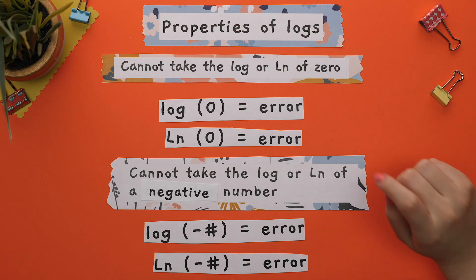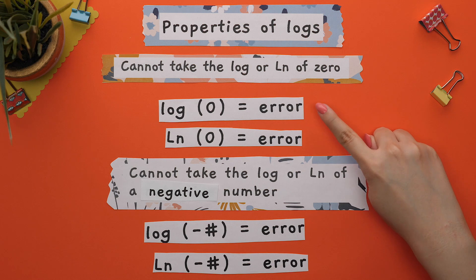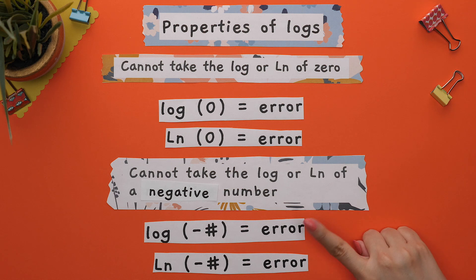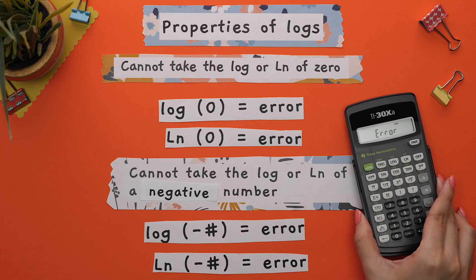Some rules and properties to know for logs and natural logs are these. Rule one, you are not able to take the log or natural log of zero. Rule two, you are not able to take the log or natural log of a negative number. This is why your calculator will say error if you try to do this. If for some reason you get a concentration or value that is zero or a negative, this is a way to check yourself and see that a mistake was made in your previous calculation.